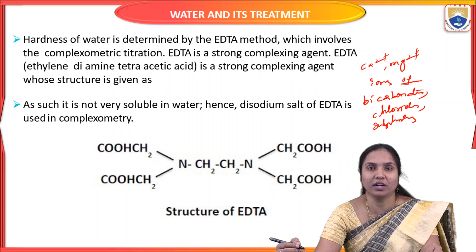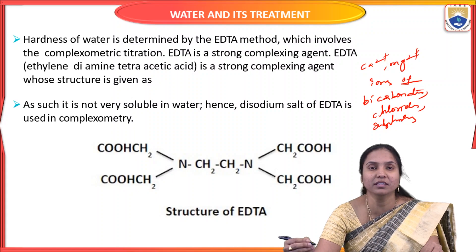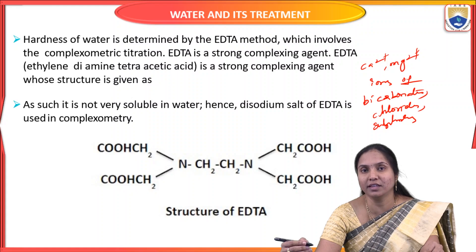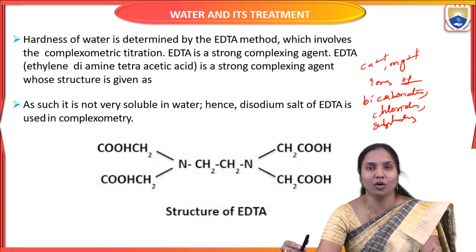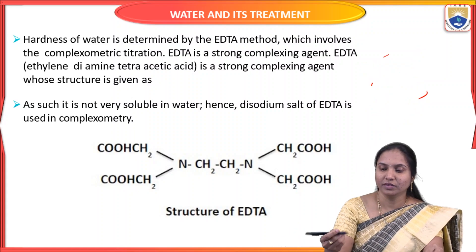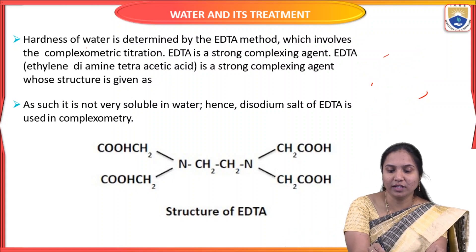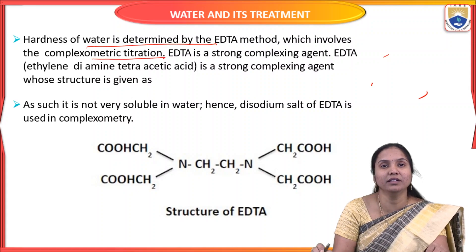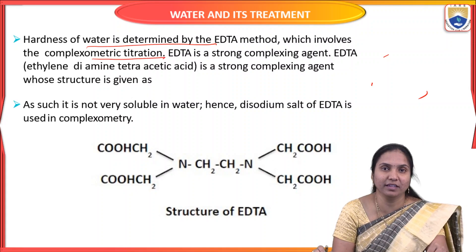How can we estimate this hardness, or the hardness-causing ions? How much percentage of these ions are present in this water? It can be estimated by using EDTA, which acts as a strong complexing agent. This method is also called Complexo-Metric Titration.